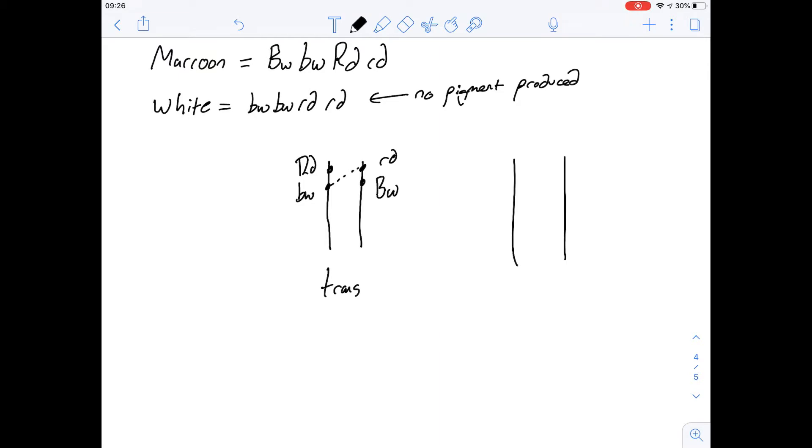But what about cis? What would that mean? So if we're told that the trans-dihybrid means that recessive allele of each gene is located on different homologues, then cis obviously means they're going to be located on the same homologues.